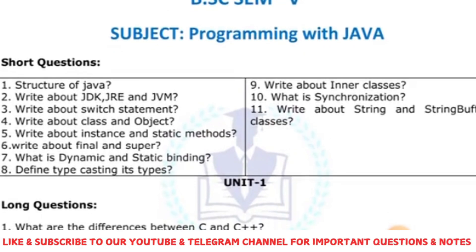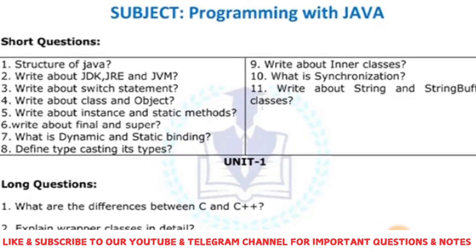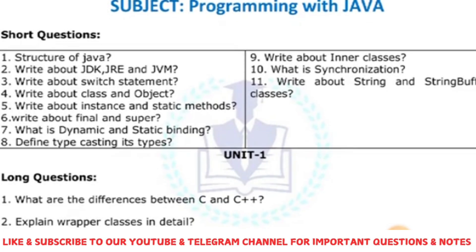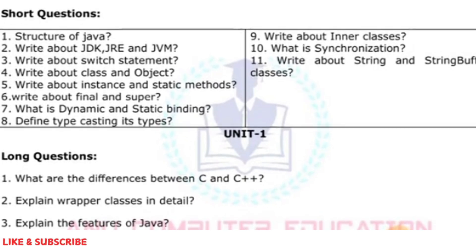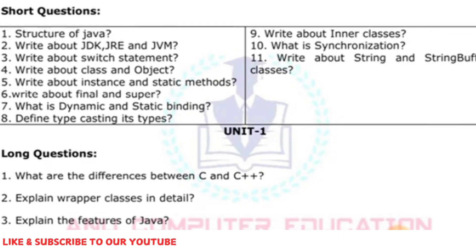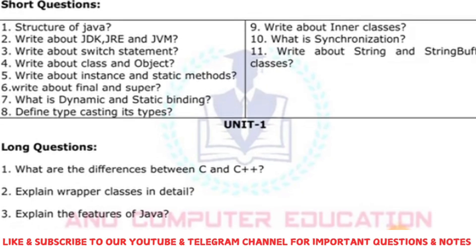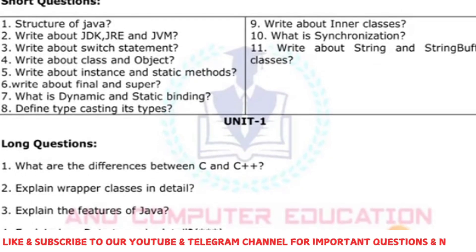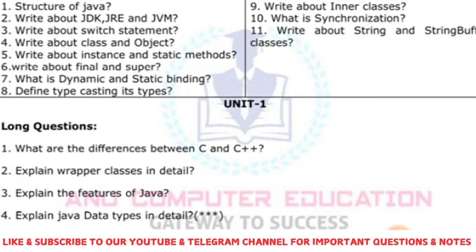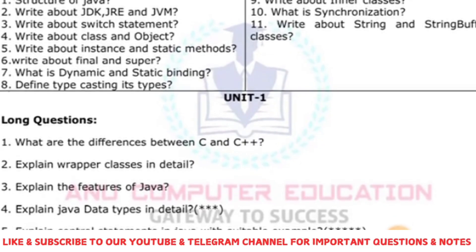When it comes to Unit 1, write about the differences between C and C++. The next important question is wrapper classes in detail — for example, Integer, Integer.parseInt, Float, String — these are all different types of wrapper classes. Also explain the features of Java, which is a very important concept, and cover data types in Java.